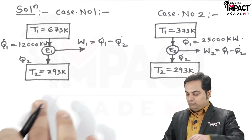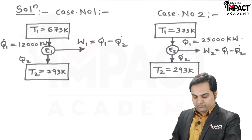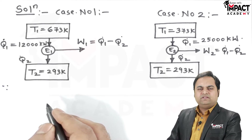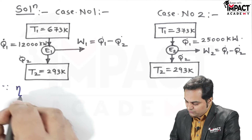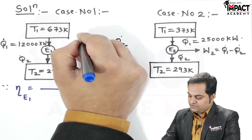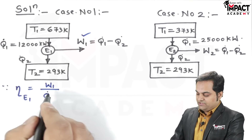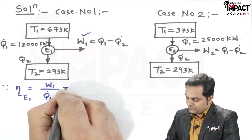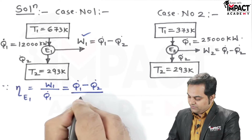Now, since the Carnot efficiency is the maximum amount of efficiency possible between the same temperature limits, the efficiency of engine 1 is output upon input. The general formula: efficiency equals output divided by input. Output of an engine is the work produced, W1, and input is the heat supplied, Q1 dot. So W1 can also be written as Q1 dot minus Q2 dot divided by Q1 dot.